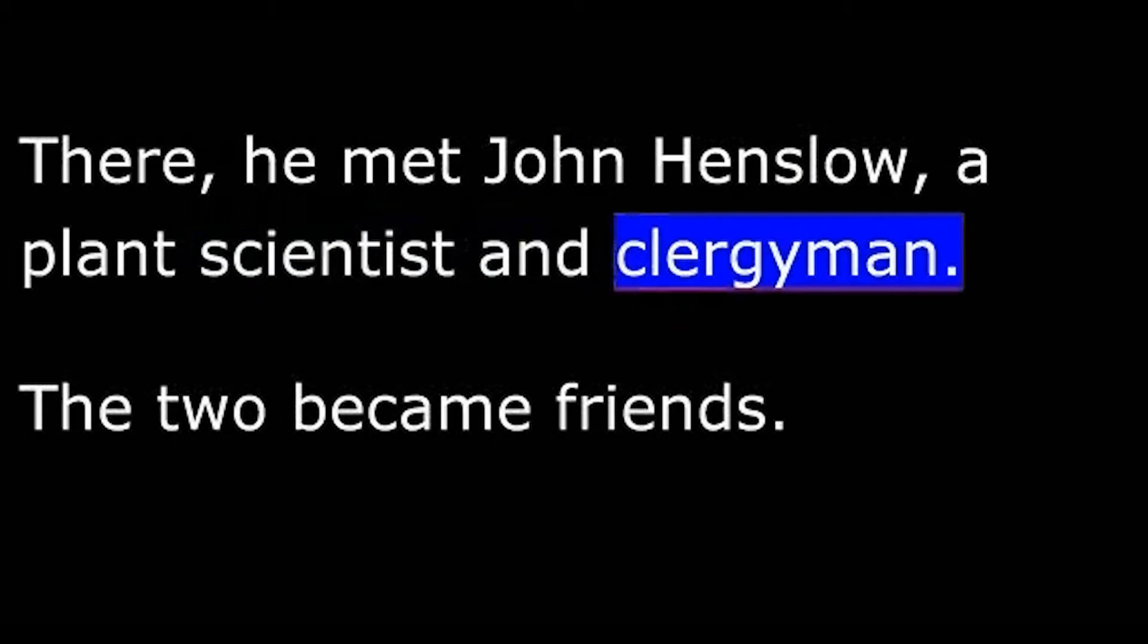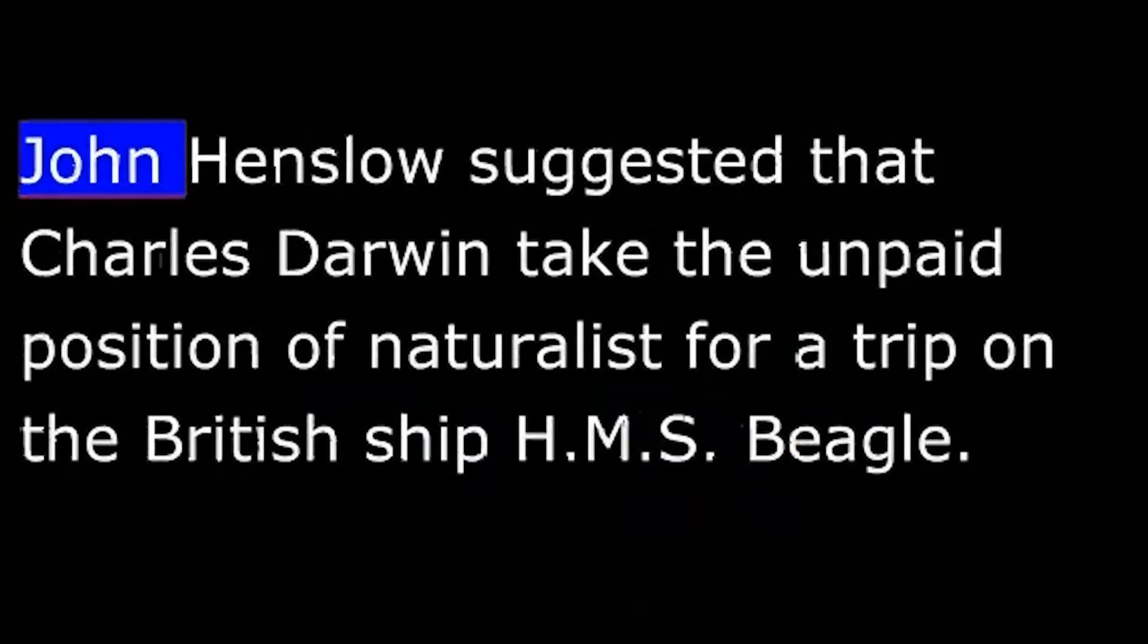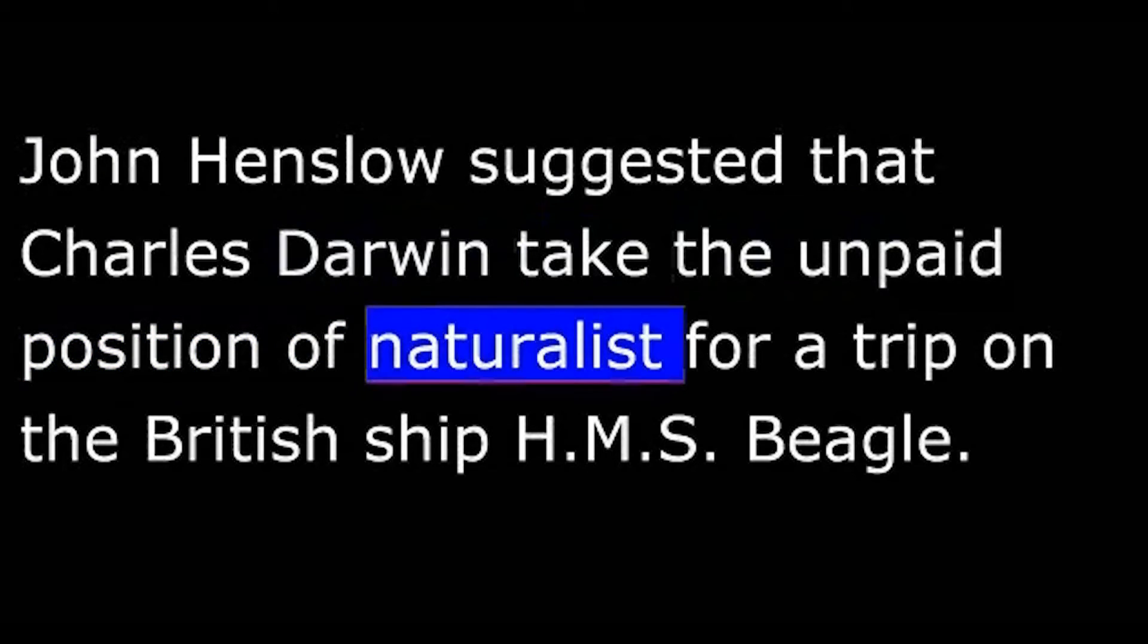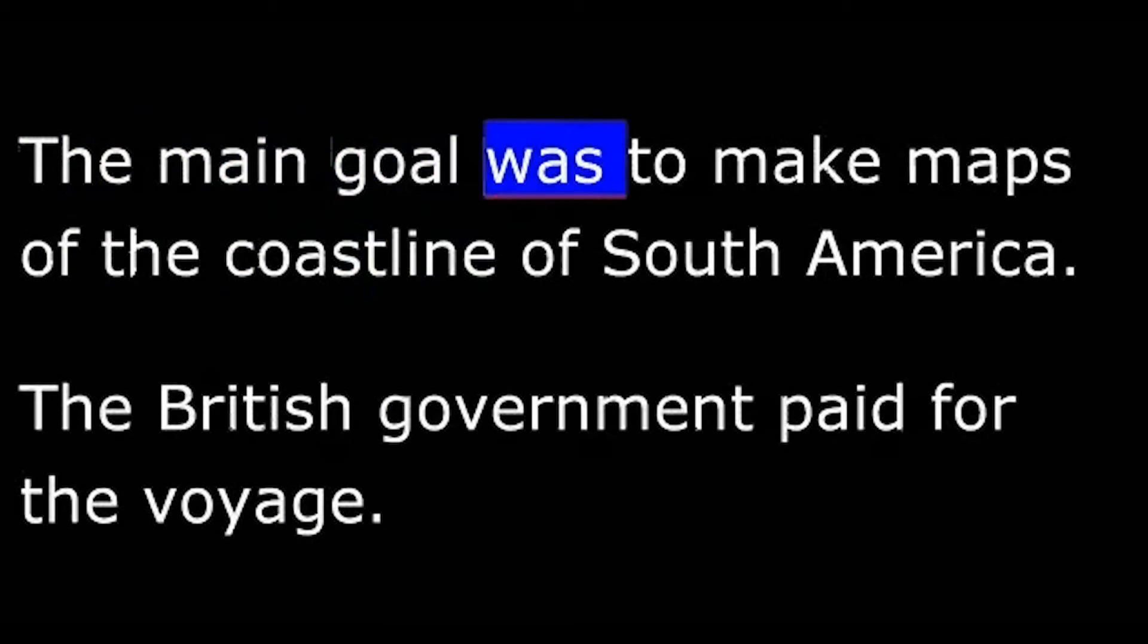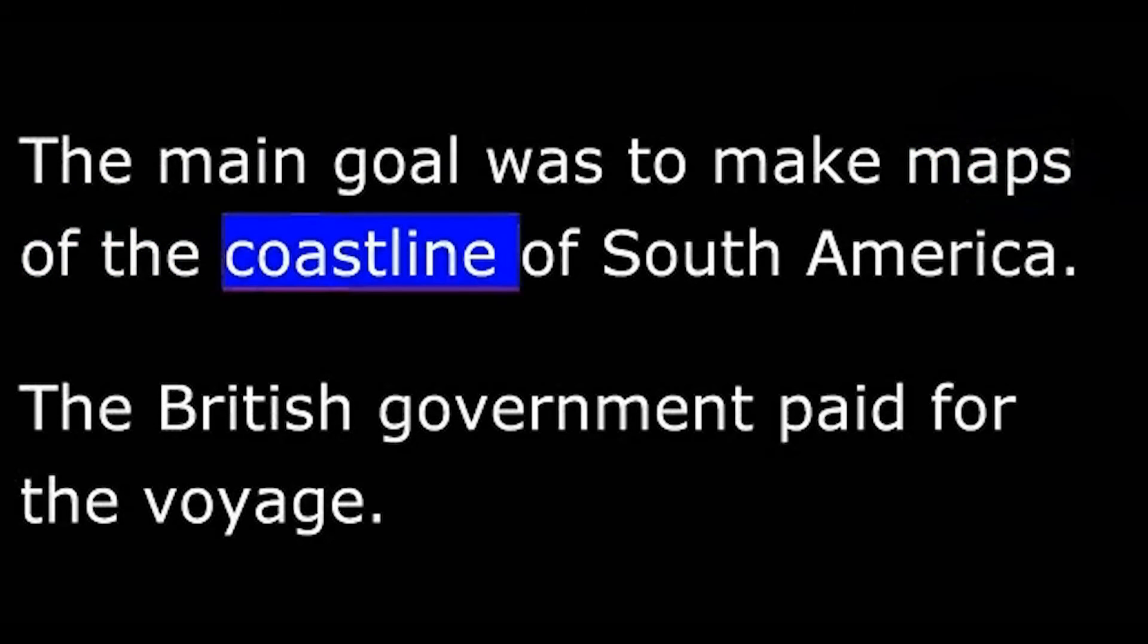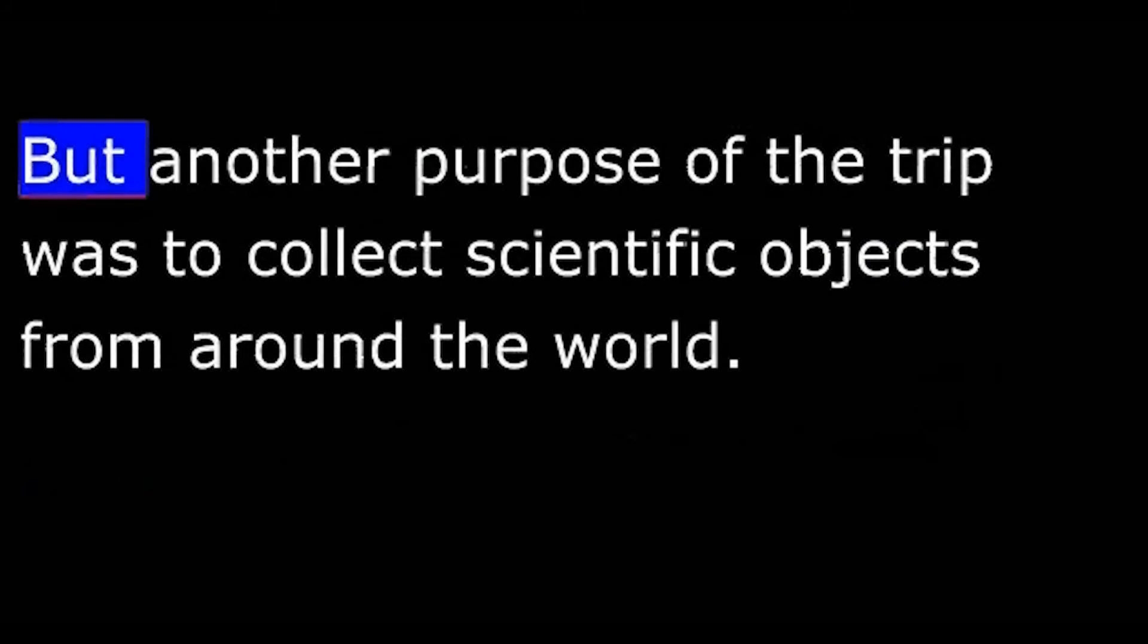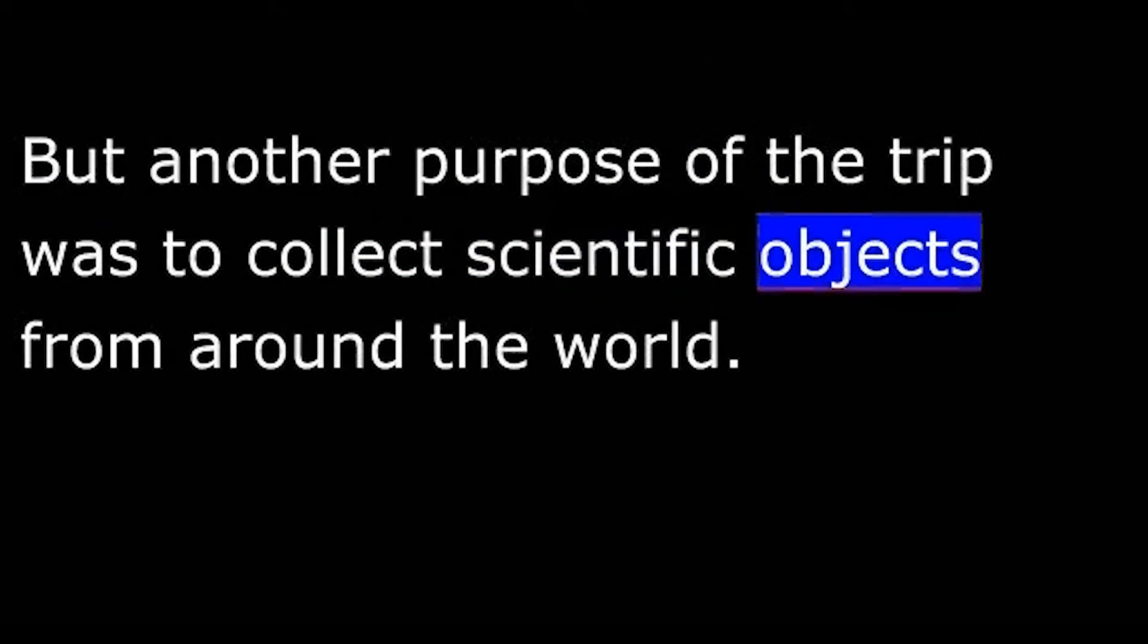John Henslow suggested that Charles Darwin take the unpaid position of naturalist for a trip on the British ship HMS Beagle. It sailed around the world from 1831 to 1836. The main goal was to make maps of the coastline of South America. The British government paid for the voyage, but another purpose of the trip was to collect scientific objects from around the world.